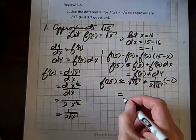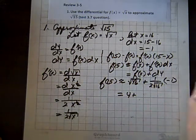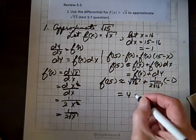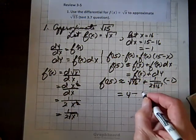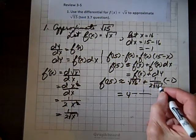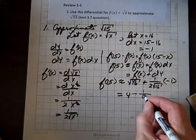So now we're going to have one over two root, square root of 16, and dx is minus one. So that equals, 16, square root of that is four.